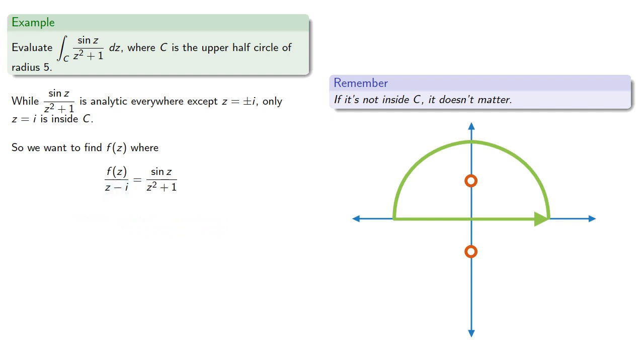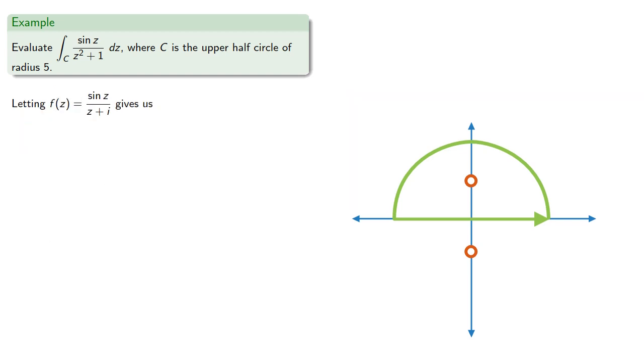We've factored z² + 1. And comparing the two sides suggests we use f(z) equal to sine z over z + i. So f(z) equals sine z over z + i gives us...